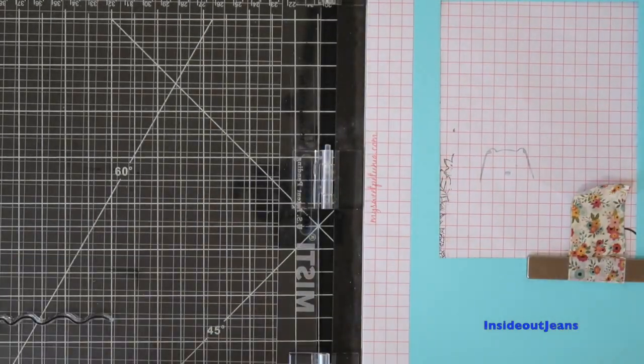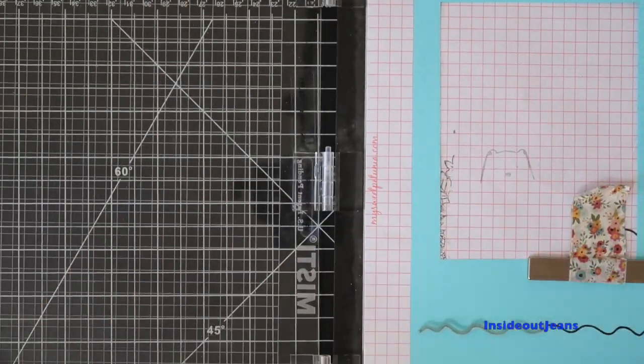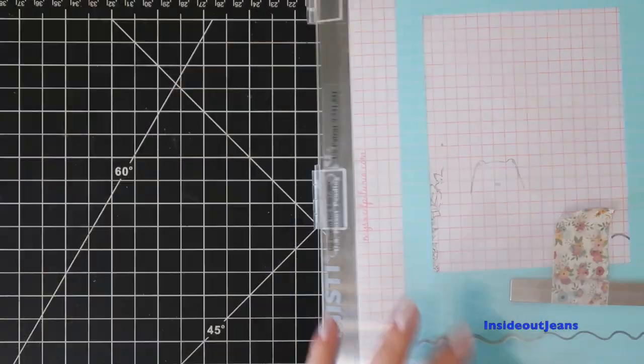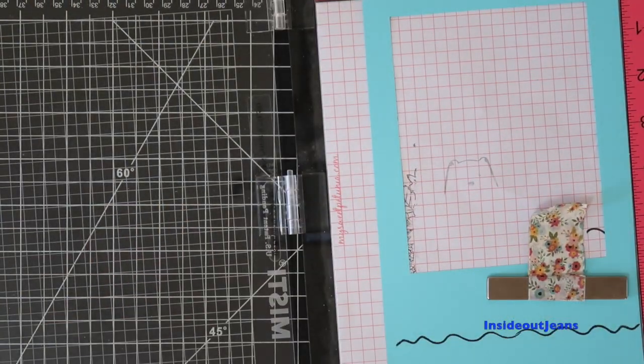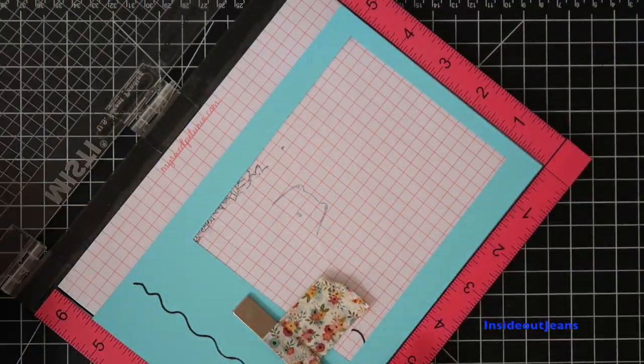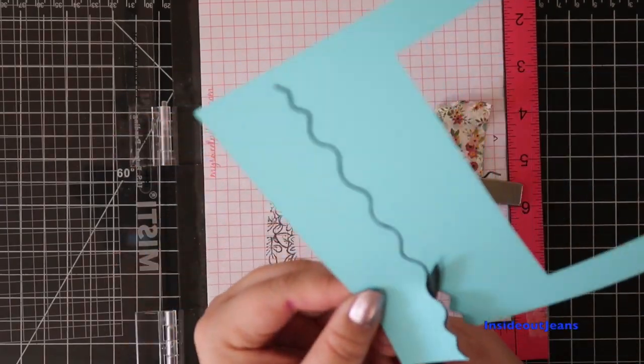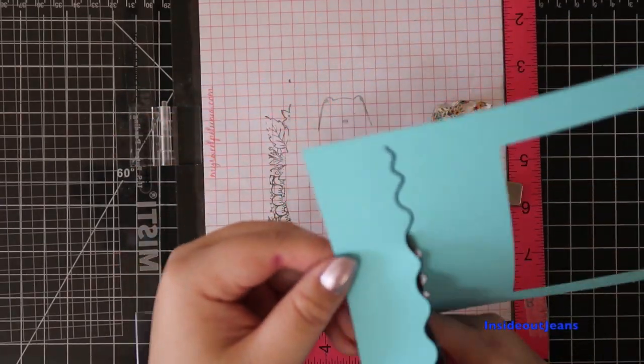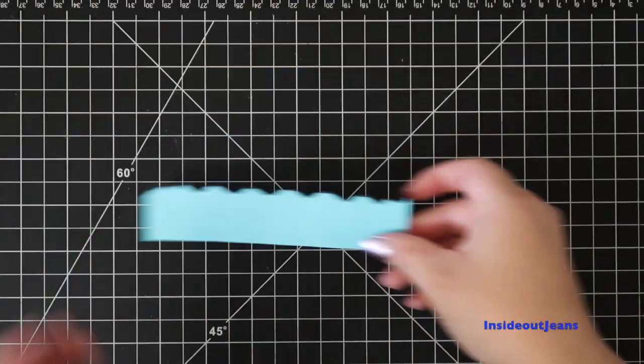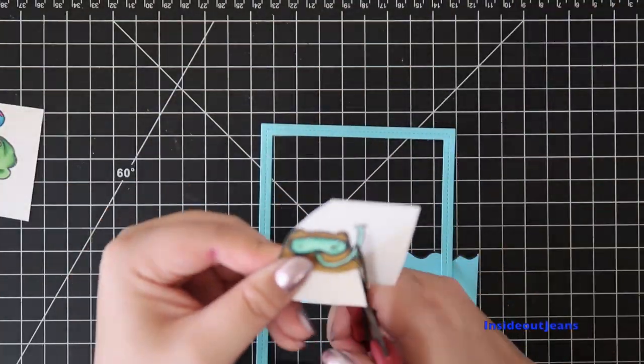Since this card is going to be a half shaker, I'm stamping out these waves. This will actually be the separation from the water and the sky. The waves will hide the foam tape behind it so that the shaker bits don't go everywhere.